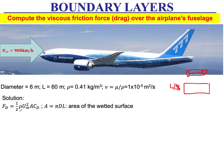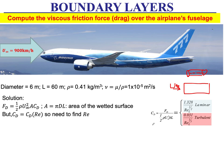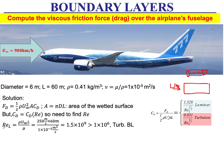The drag coefficient C_D is a function of Reynolds number, which tells us whether the flow is turbulent or laminar. We compute the Reynolds number using density, kinematic viscosity (10 to the minus 5), and u-infinity of 900 km/h divided by 3.6 to get 250 meters per second, with L equal to 60 meters. That gives a Reynolds number of one and a half billion.